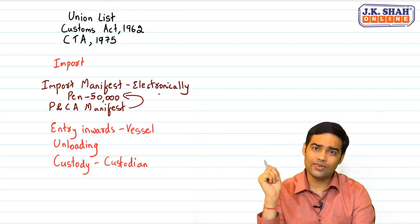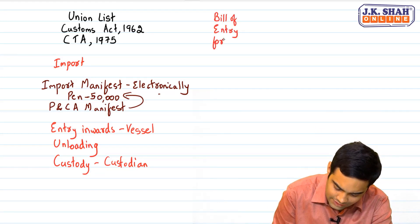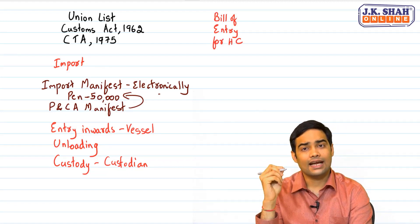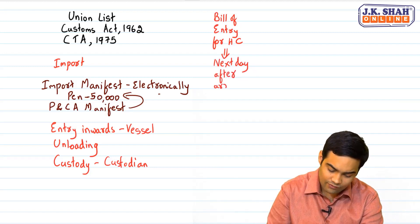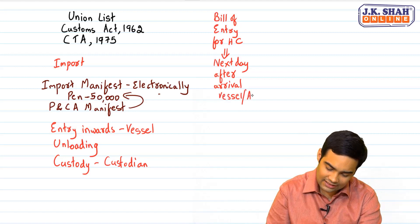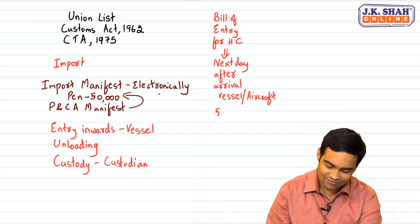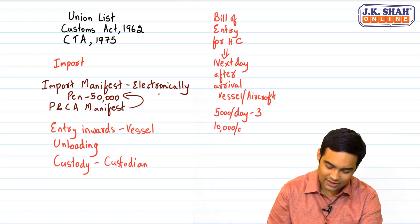Goods are with the custodian and the importer has to act. The importer will file a Bill of Entry for Home Consumption — an integrated form filed electronically. The time limit for filing is the next day after arrival of the vessel. If filed late, there is a penalty of rupees 5,000 per day for the first 3 days, and from the 4th day it becomes 10,000 per day.